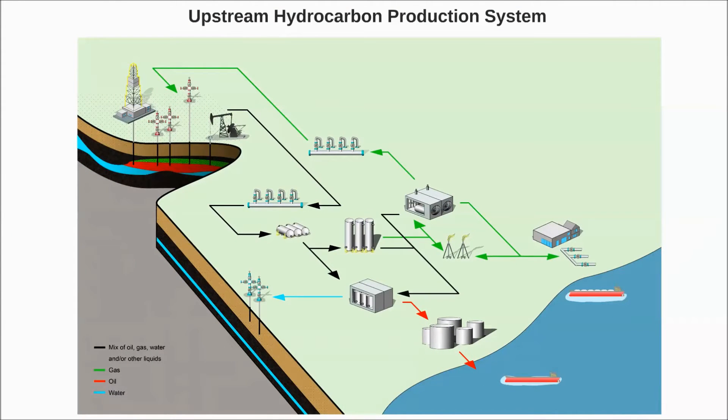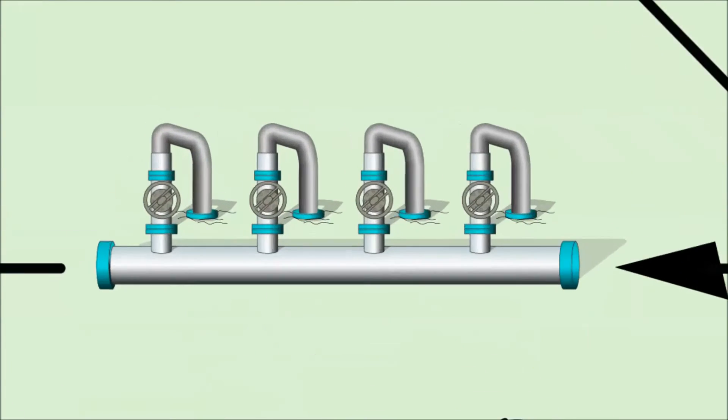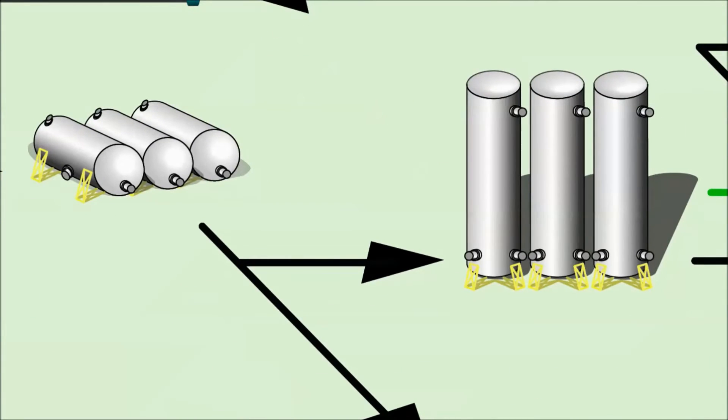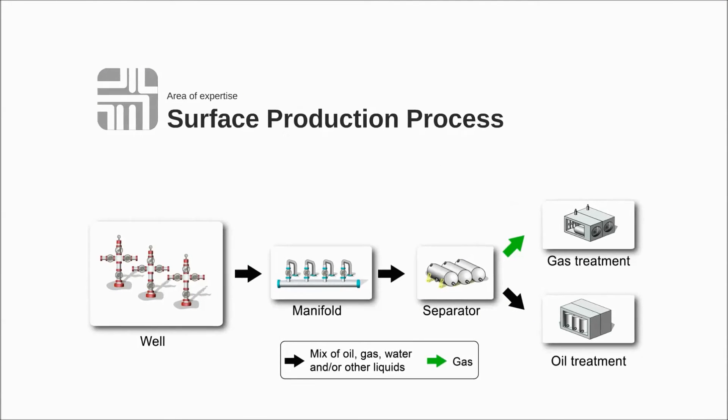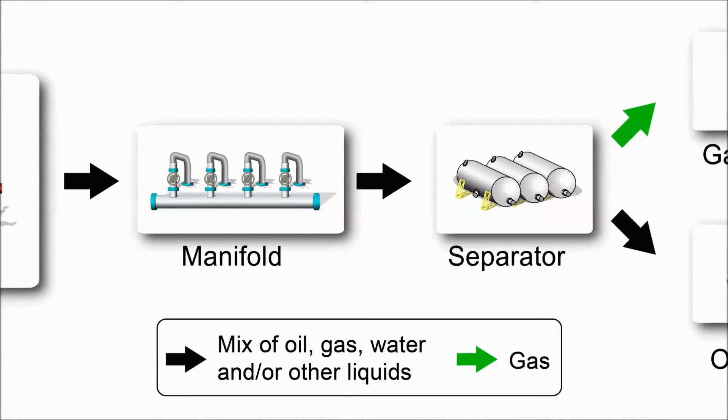The flow from the well is commingled with that of other wells in a gathering station. The wells are here connected to a manifold that allow us to direct flows to the various treatment processes. From the manifold, the hydrocarbons will first undergo a rough separation into the two main components, gas and oil.